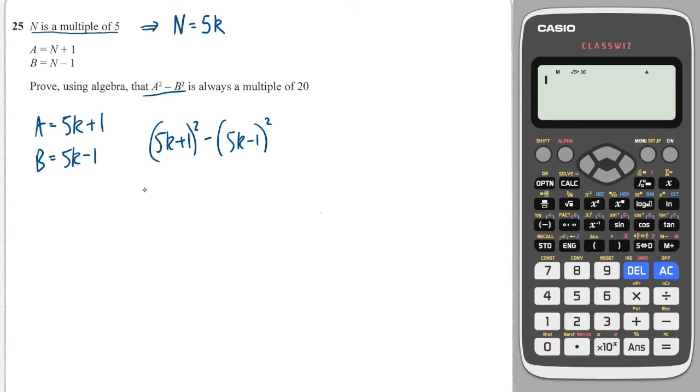a squared will be 5k plus 1 squared, and b squared will be 5k minus 1 squared. Expanding these brackets, I'm going to do it as quickly as possible. I'm going to get 25k squared, then 5k times 1 which is 5k, then 1 times 5k which is 5k, and then 1 times 1 which is 1. I'm going to put that in brackets with a minus sign there. And here I'm going to get 25k squared, 5k times minus 1 which is minus 5k, minus 1 times 5k which is minus 5k, and minus 1 times minus 1 which is plus 1.